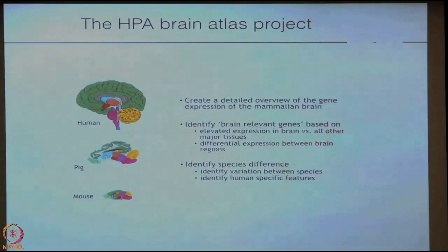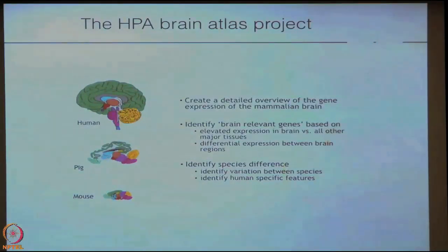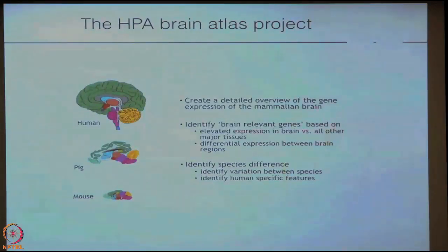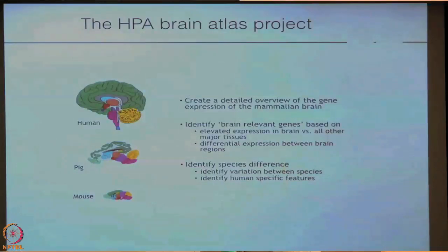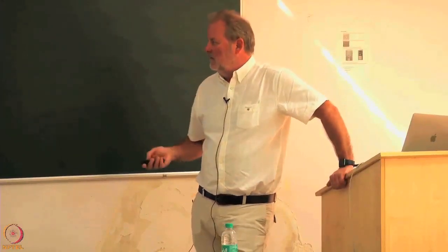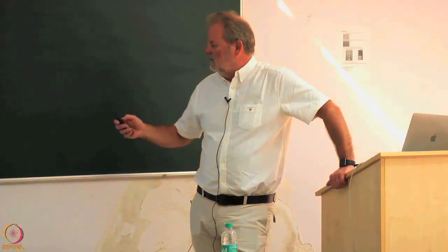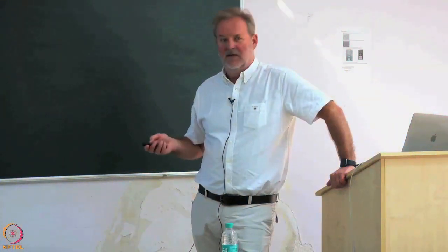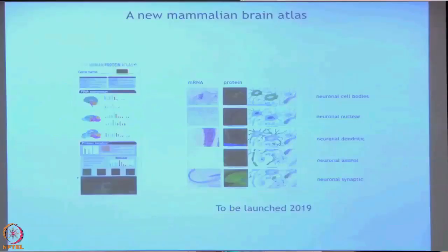The Brain Atlas will use three different species — which is new for the Protein Atlas. We will use pig data in a collaboration with BGI, the Beijing Genome Institute, and also mouse data. We will try to identify which genes are specifically expressed in the brain, which are region-specifically expressed only in the hippocampus, amygdala, or other brain-specific regions, and also look at species differences in overall gene expression in the brain.